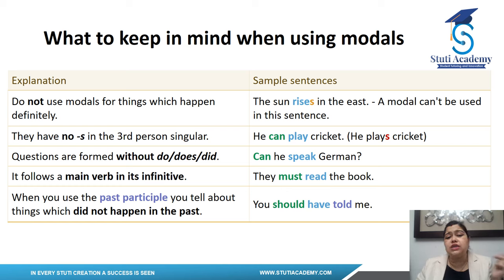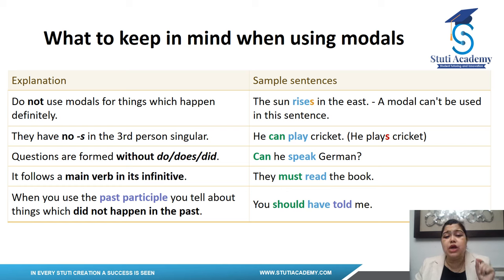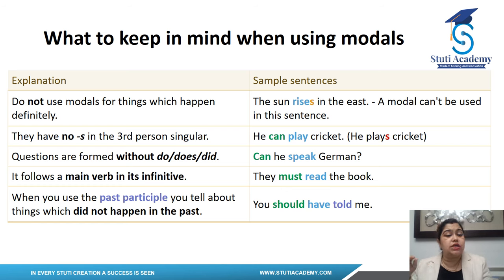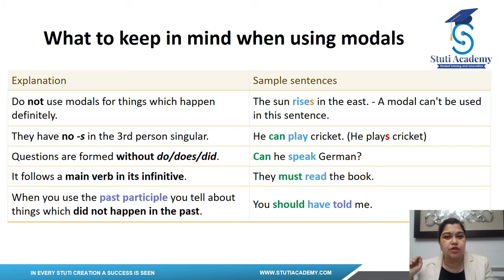When you use the past participle with a modal, you tell about things which did not happen in the past. For example: 'You should have told me' — the meaning behind the sentence is that you didn't tell me something. Telling is an action that did not happen in the past; you haven't done that action.